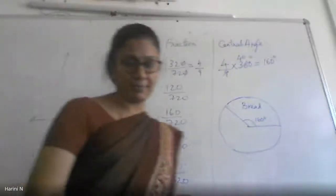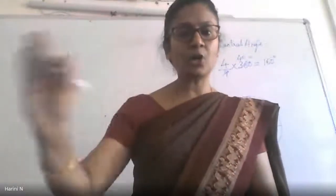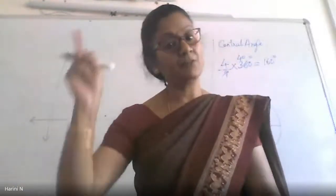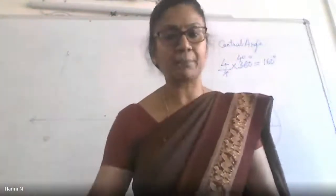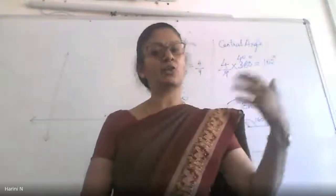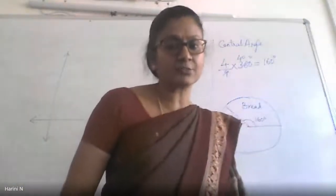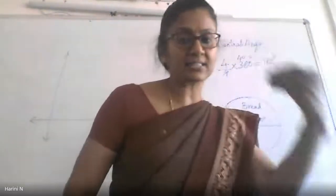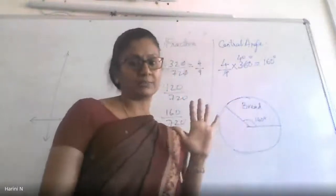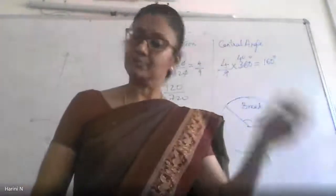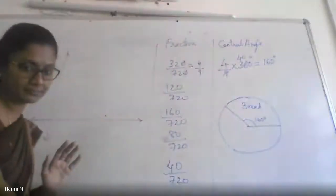A student asks: do we take the upper class limit or the lower class limit? You can take either of them, but you should uniformly maintain the same throughout. If you start with the lower limit, you should end the last entry also with the lower limit. If you start with the upper limit, you should end with the upper limit. The textbook uses the upper limit, but it is not a hard rule — just a convention.